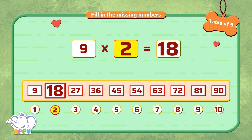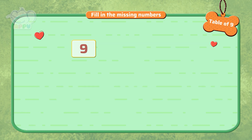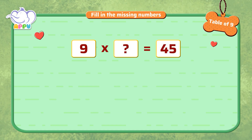Fine! 9 multiplied by a number is 45. What is the missing number?